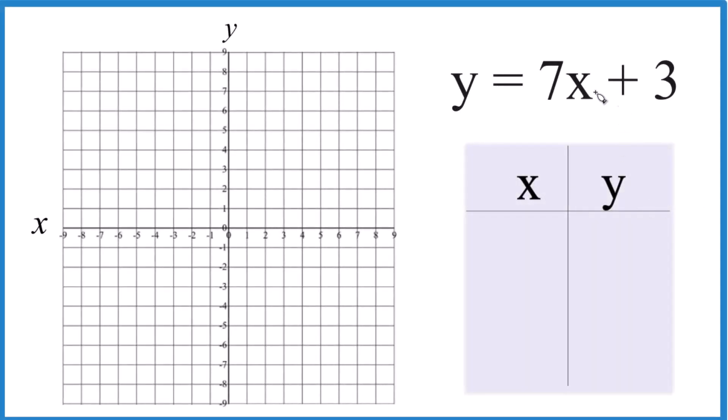All right, so let's graph the equation y equals 7x plus 3 here, and we're going to use a table of values to do this. You could use slope-intercept form, that would work as well, and if you need help with that, there's a link at the end of this video.